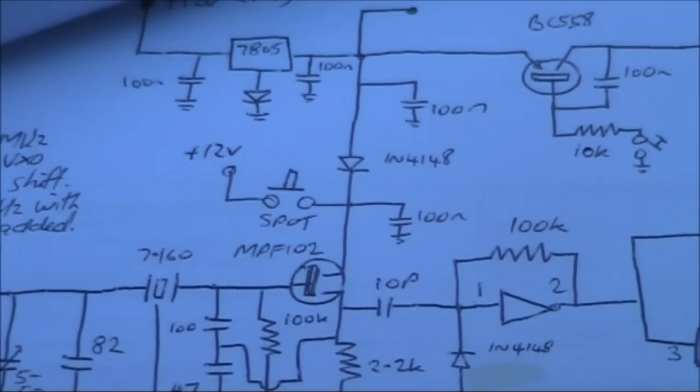The spot switch you see here is a press button switch. And all it does is apply 12 volts to the transmitter ceramic resonator oscillator when you're in receive mode. It doesn't activate the rest of the transmitter circuitry. The purpose of that is so you can hear your transmitted signal and zero the receiver into it.